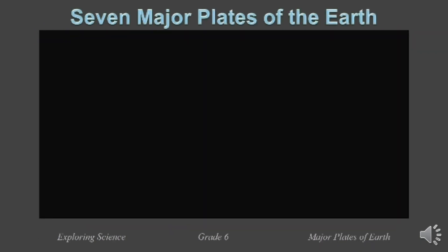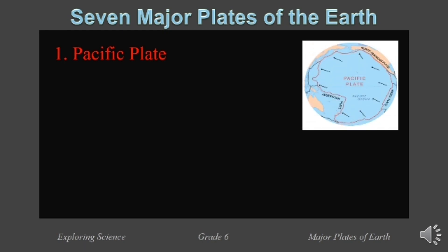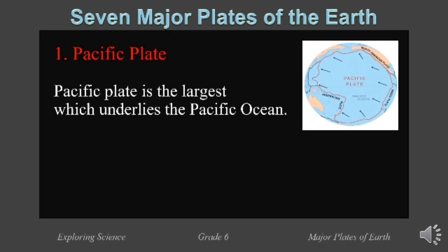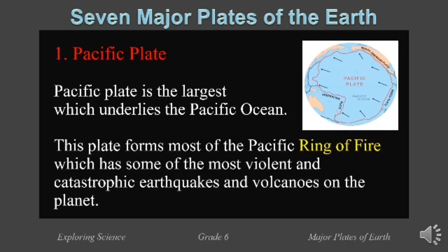Let's learn more about the seven major plates of the Earth. First, the Pacific plate. The Pacific plate is the largest, which underlies the Pacific Ocean. Specifically, it stretches all the way along the west coast of North America to the east coast of Japan and Indonesia. This plate forms most of the Pacific Ring of Fire, which has some of the most violent and catastrophic earthquakes and volcanoes on the planet.